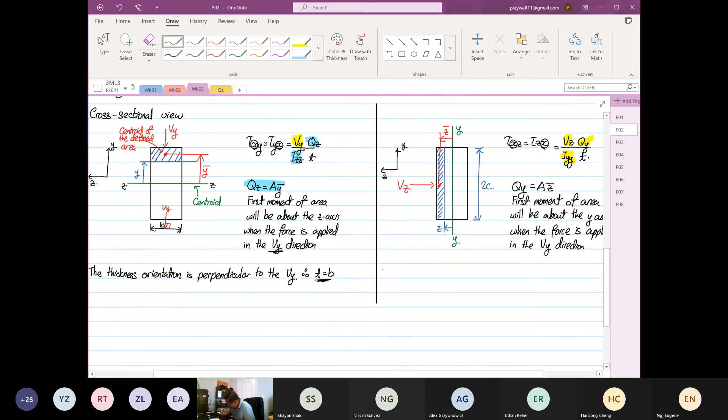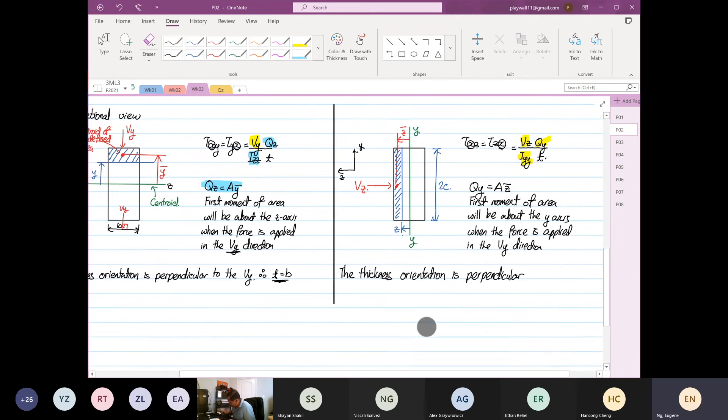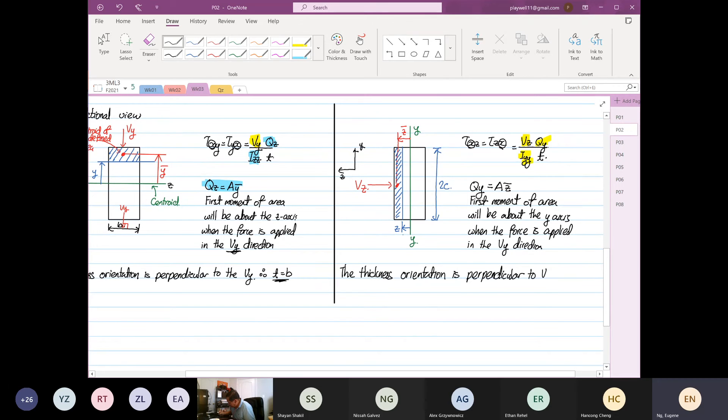So thickness orientation is perpendicular to the yz plane. So therefore, t is equal to what? 2c. T is equal to 2c.